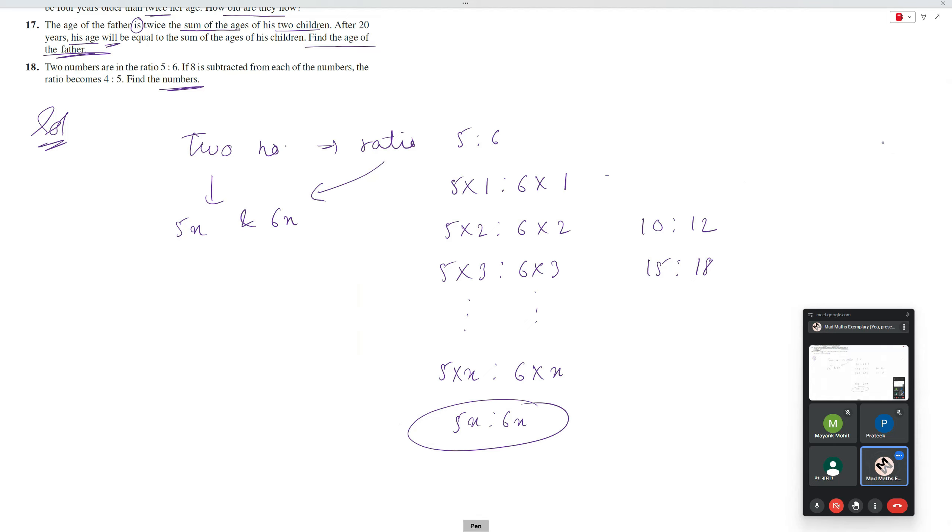Now if 8 is subtracted from each of the numbers, means 5x minus 8 and 6x minus 8. If this is the ratio of 4 by 5, it is very easy?